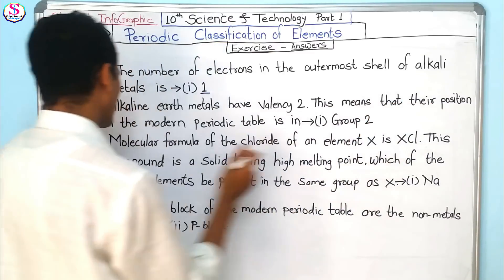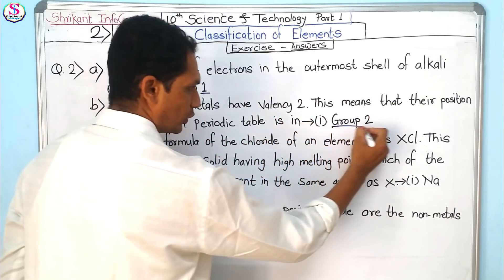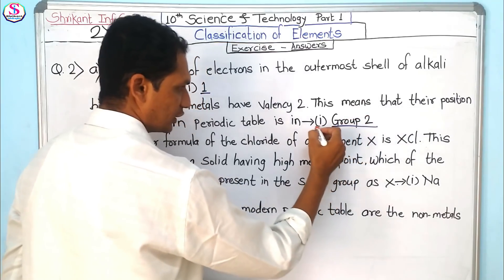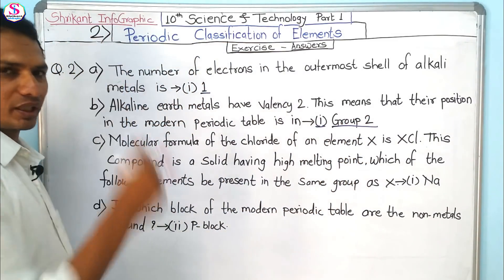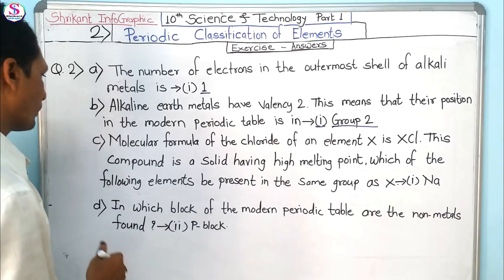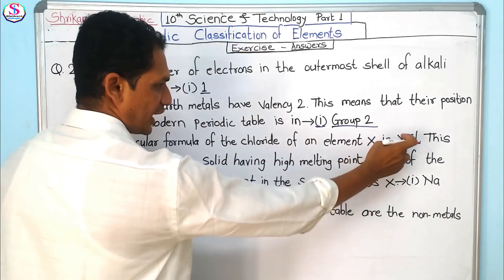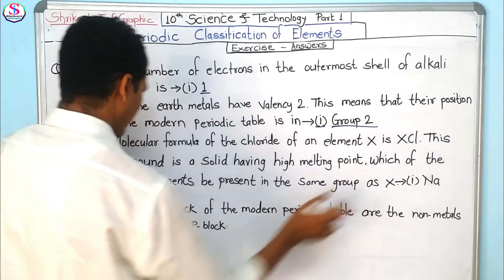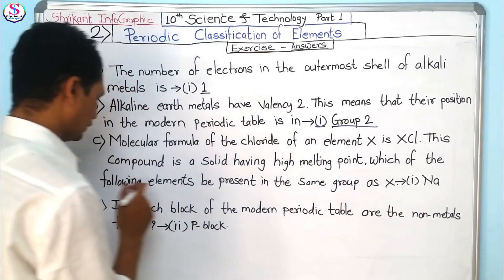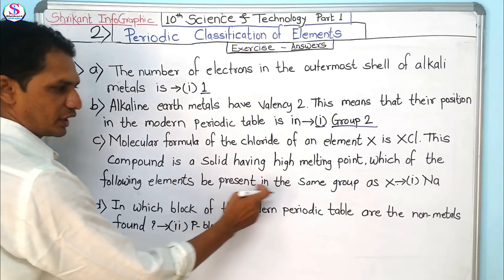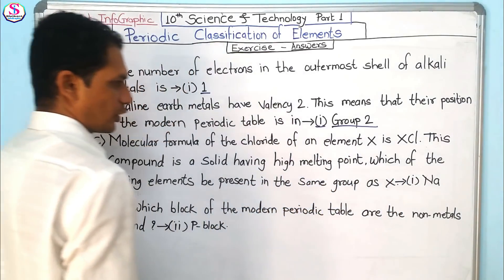This means their position in the modern periodic table is in Group 2 — that is the answer, option 1 — because the valency and group number are the same. The molecular formula of the chloride of element X is XCl. This compound is a solid with a high melting point.